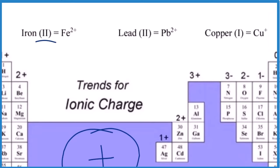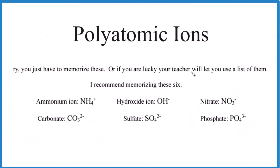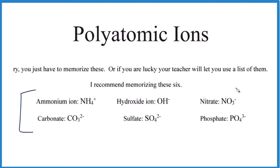The next ones are the polyatomic ions. They're ions because they have charges, but you can't look these up on the periodic table. You either have to memorize them or your teacher will give you a list. Either way, memorize these six and your life gets a lot easier in chemistry — we see these all the time.